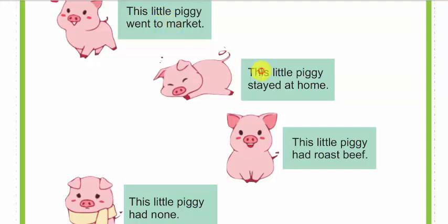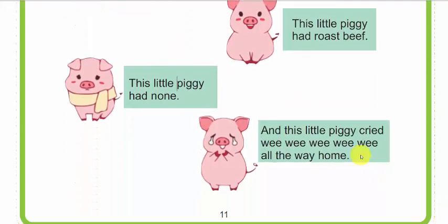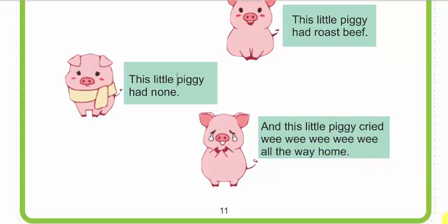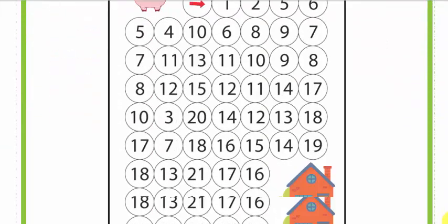Recuerden lo que dice cada puerquito. This little piggy went to market. This little piggy stayed at home. This little piggy had roast beef. This little piggy had none. And this little piggy cried wee, wee, wee, wee, wee all the way home. That is what you need to pronounce in each one of the puppets.